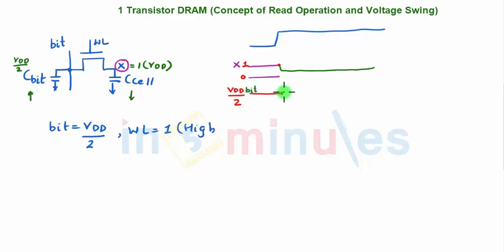In the other case where my X would have been 0, this was still VDD by 2. Then due to charge sharing and word line being high, this will go up and this will come down. If my X would have been 0, it would go up by a small value, whereas the bit line at VDD by 2 initially will go down by a small value.